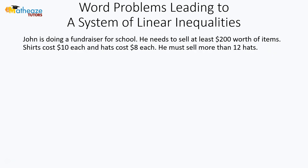Second example: John is doing a fundraiser for a school. He needs to sell at least $200 worth of items. Shirts cost $10 each, and hats cost $8 each. He must sell more than 12 hats. The first thing we're going to do is identify important terms. We have 'at least' and we have 'more than.' Those are the inequality keywords, and we're looking at shirts and hats.